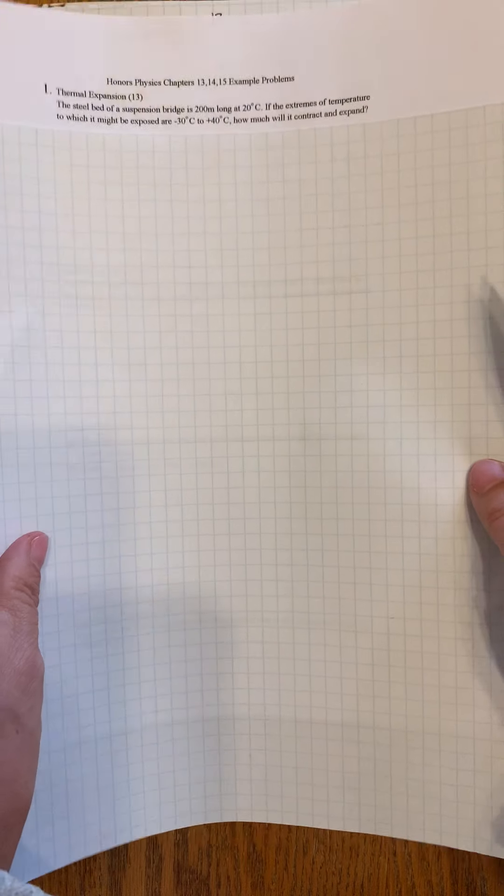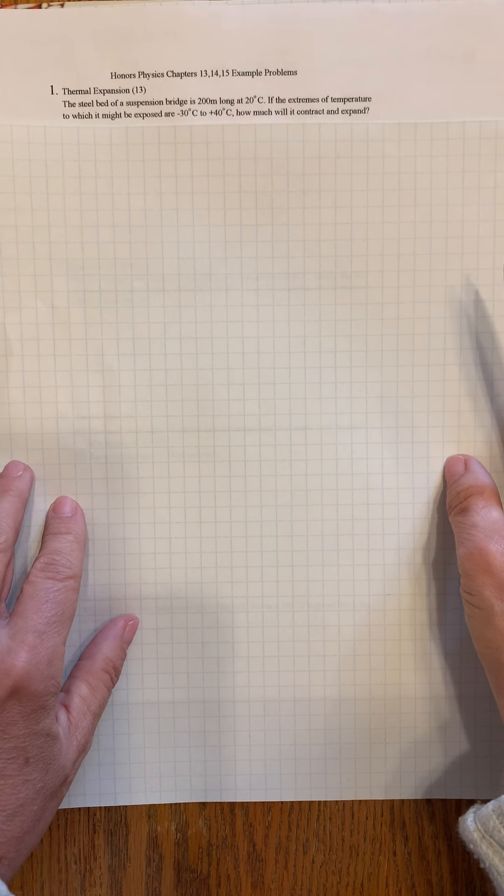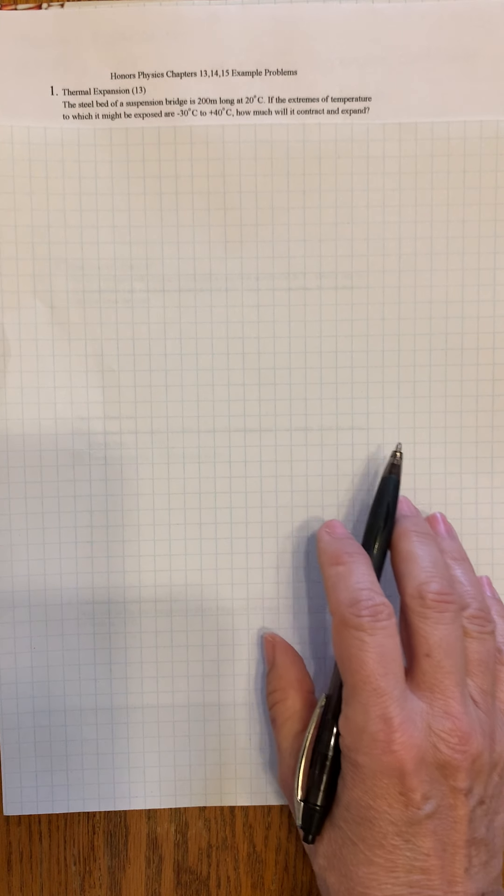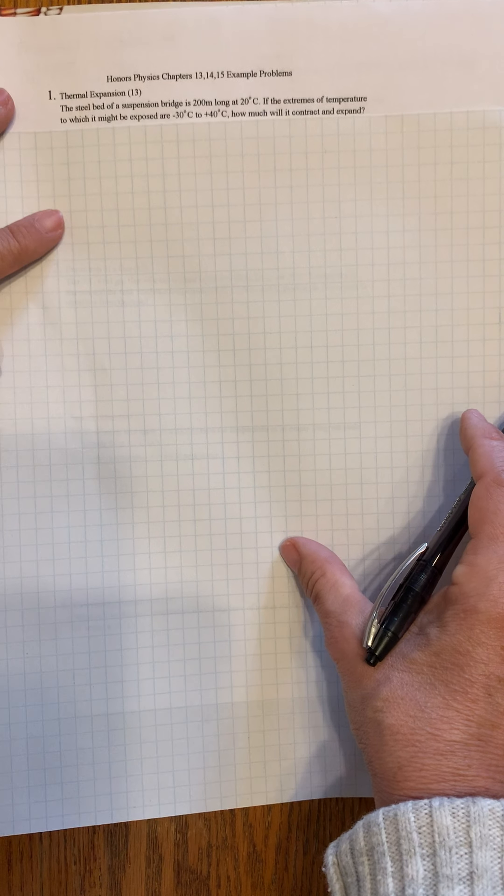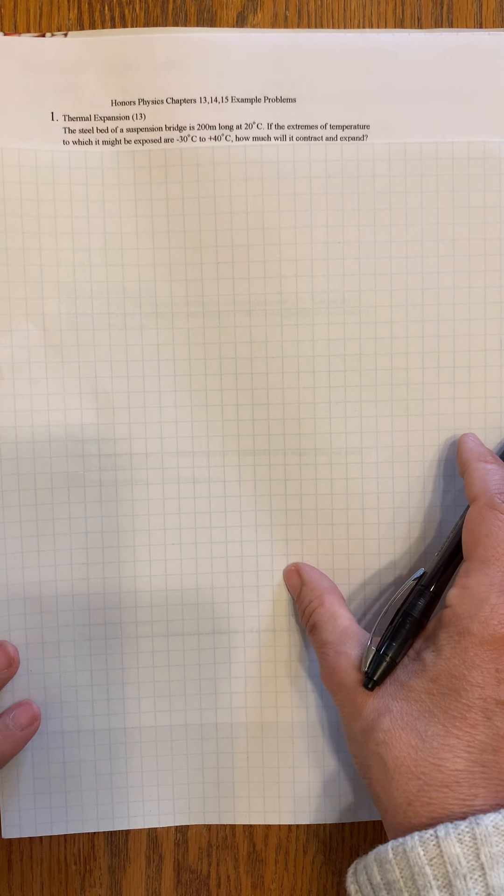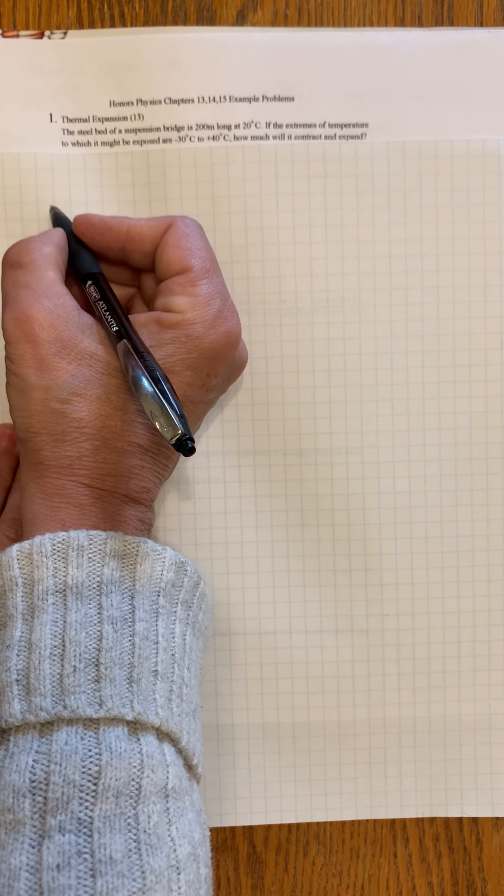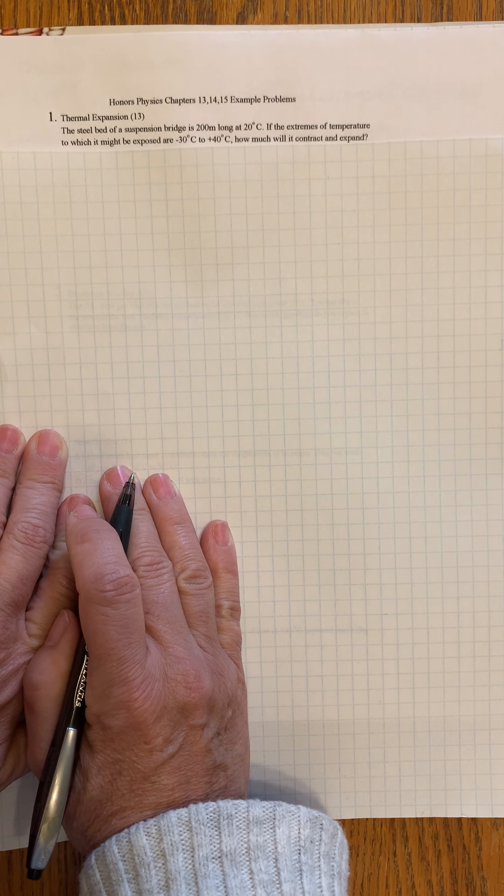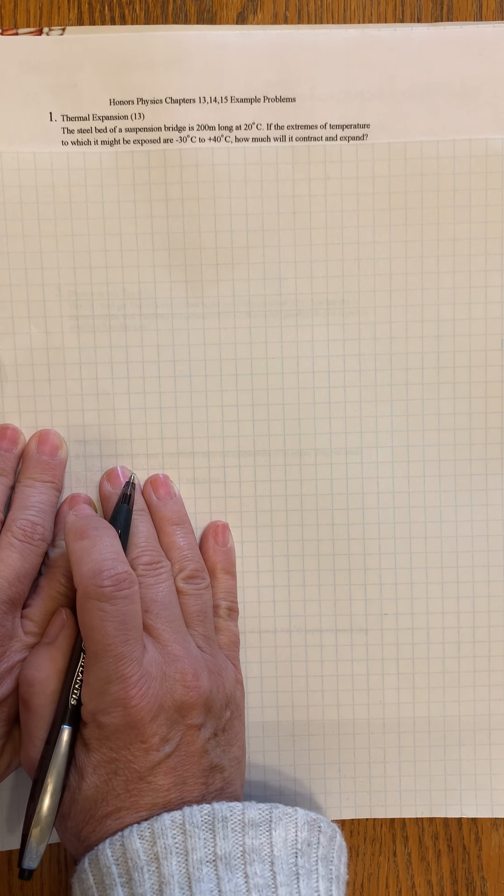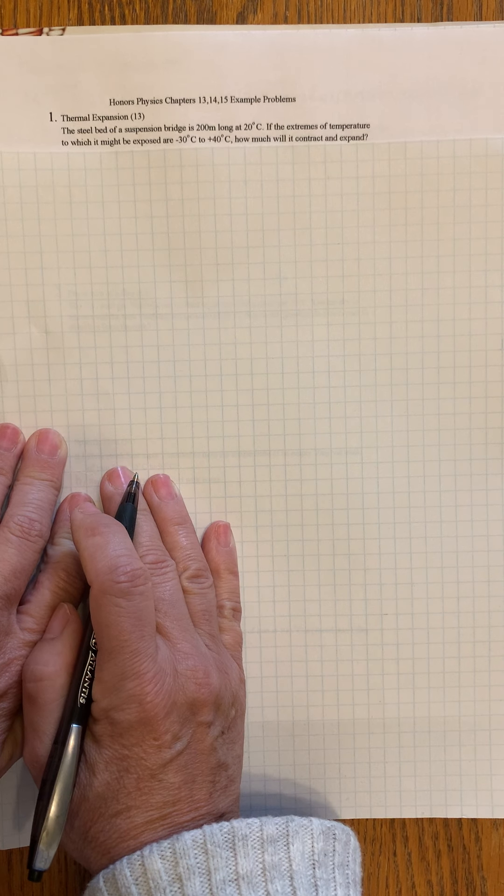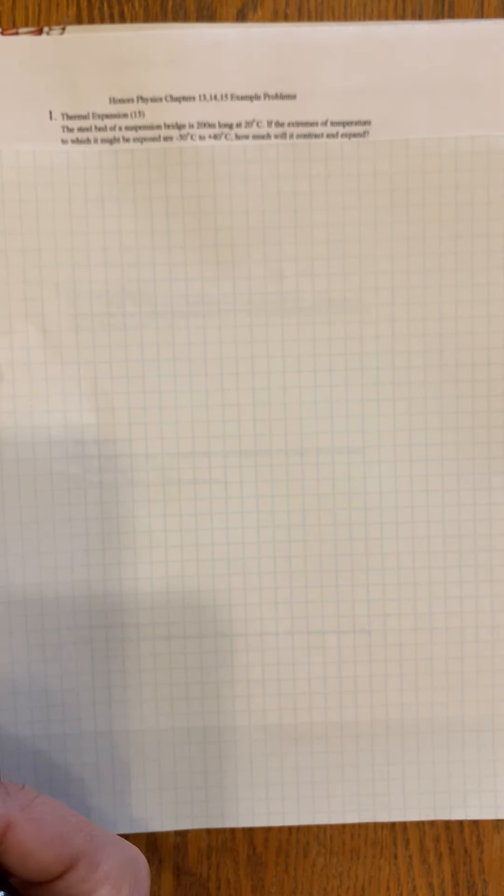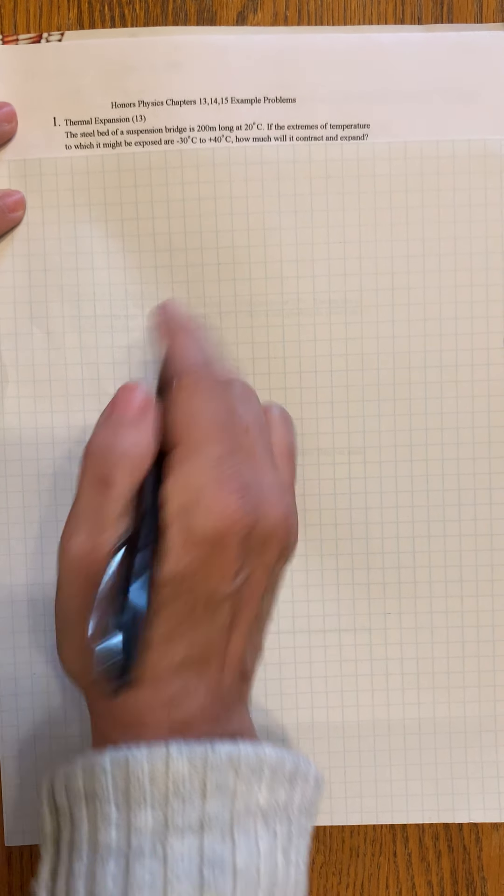Let's start by doing the first example problem. This is a thermal expansion problem. The steel bed of a suspension bridge is 200 meters long at 20 degrees Celsius. If the extremes of temperature to which it might be exposed are negative 30 degrees Celsius to positive 40 degrees Celsius, how much will it contract and expand? This is a big consideration when building bridges because they have to put expansion joints in.